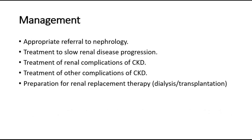For management of chronic kidney disease, there are five main principles. First is appropriate referral to nephrology — we have to know when to refer to the nephrology unit. Second is treatment to slow down the progression of renal disease, which includes controlling blood pressure, controlling glucose level with a target HbA1c, and adjusting lifestyle — exercise, healthy weight, and stopping smoking.